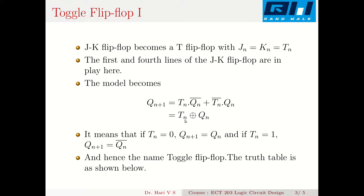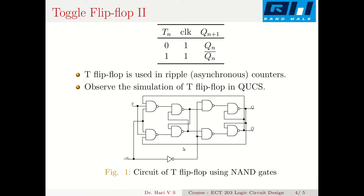If Tn equals 0, Qn+1 equals Qn, and if Tn equals 1, Qn+1 equals Qn-bar, because 1 XOR Qn equals Qn-bar. This toggling behavior gives the flip-flop the name toggle flip-flop. The truth table shows: with Tn equal to 0 and the clock active, Qn+1 equals Qn (the previous state); with Tn equal to 1 and the clock active, Qn+1 equals Qn-bar. T flip-flops are used in ripple or asynchronous counters.